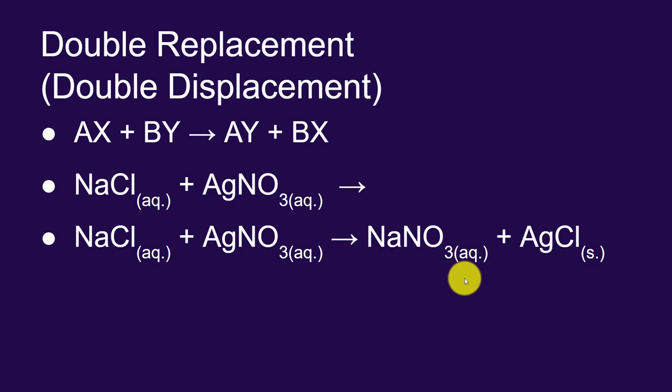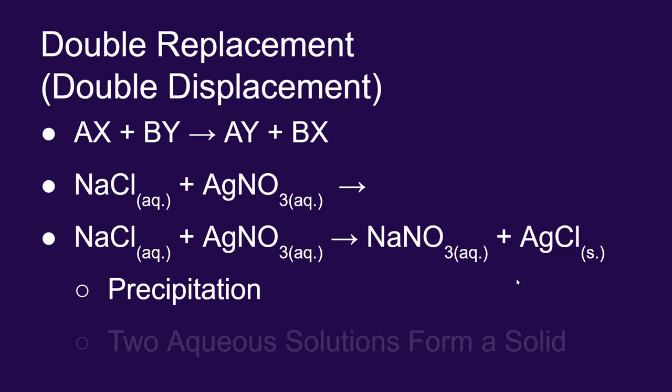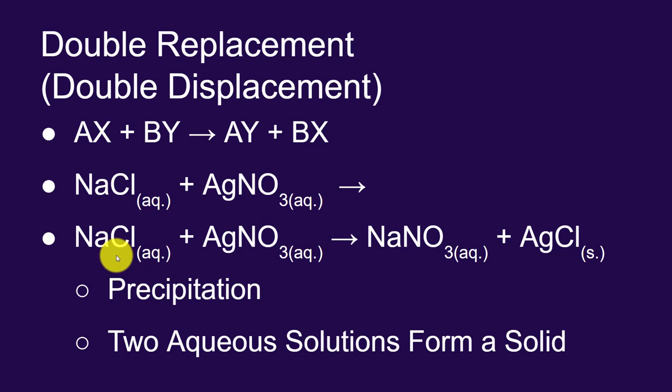I want you to note that in this particular equation, we end up making a solid as a product. This is referred to as a precipitation reaction. You start with two aqueous solutions, in this case the sodium chloride and the silver nitrate, and you end up making a solid product.